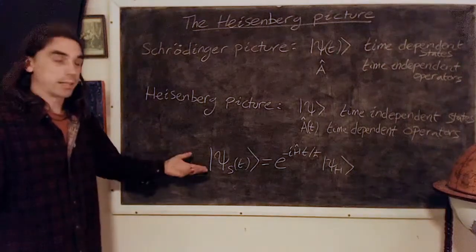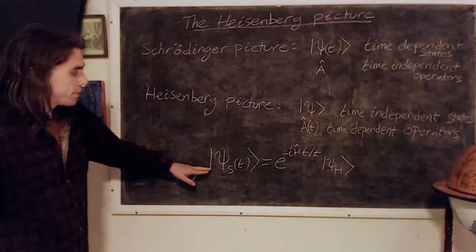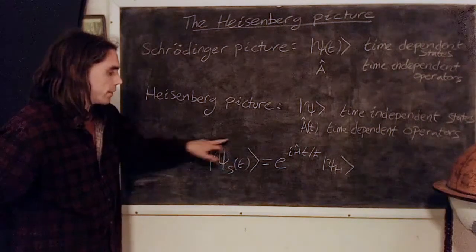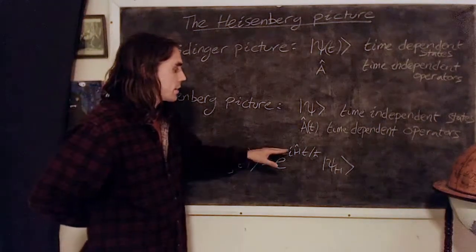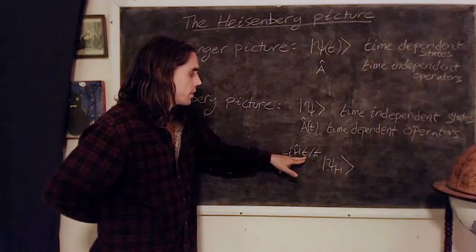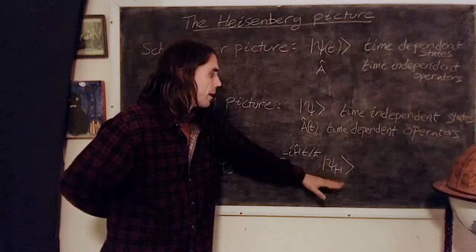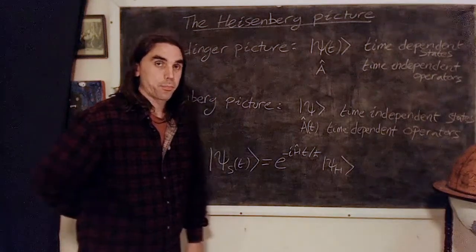This gives us the following relation: just combining the equations, we have that the time dependent state in the Schrödinger picture is just given by e^(-iHt/ℏ) all acting on the time independent Heisenberg state.